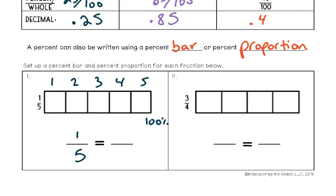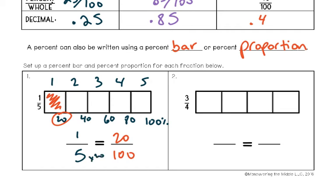Dividing 100 by 5 gives 20, so the equivalent percentages are 20, 40, 60, 80, 100. Since it's split into five, one fifth of this bar shaded is equivalent to 20%. You can also think about this as a proportion — to get from one fifth to a percentage, how can you get 5 to 100? You multiply by 20. Whatever you do to the bottom of the fraction you have to do to the top. That's another way to think about it.